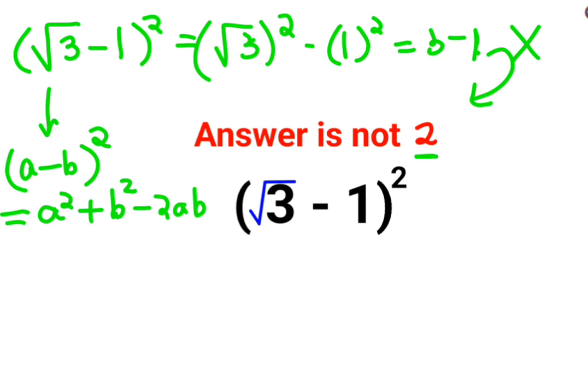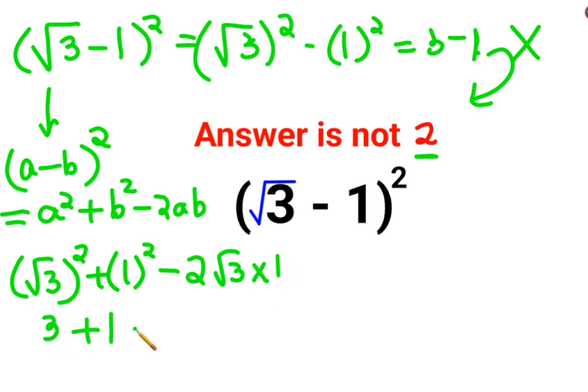So here your a is basically root 3. So we will do root 3 the whole square plus 1 square minus 2 root 3 into 1. So this becomes 3 plus 1 minus 2 root 3.